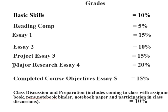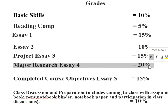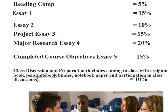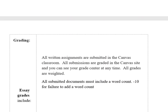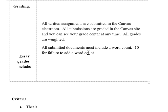Essay 4 is reserved for people who have a grade point, at the point of Essay 3 completion, that is below 91.51. So after you've completed basic skills, reading composition, Essay 1, Essay 2, and Essay 3, and you have perfect attendance in class, and your grade point average is 91.51 or above, you can waive the final essay and take the A that you have earned. Remember, every document must be submitted with a word count — minus 10 points for failure to do that. That's to protect you and make sure that you legitimately show the number of words you have written.